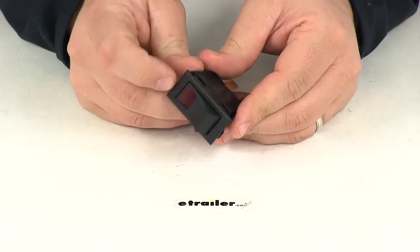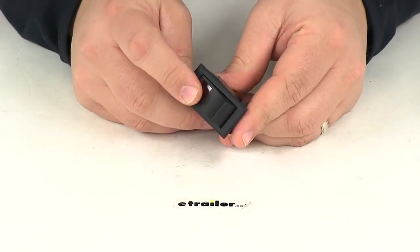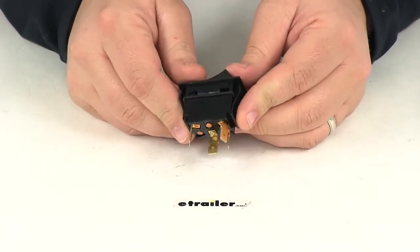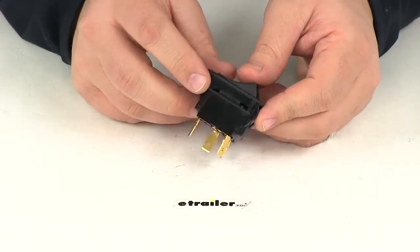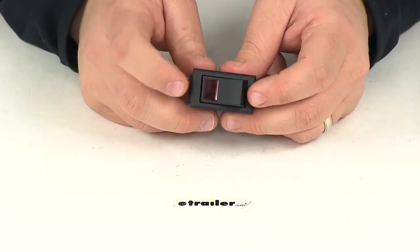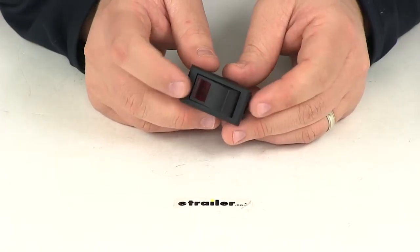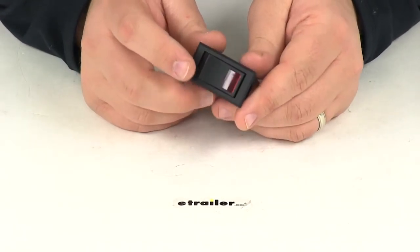It's going to have on and off circuitry, so two functions. This is a single pole, single throw rocker switch with a black nylon bezel and housing. It features that red pilot light on one side of the rocker switch.